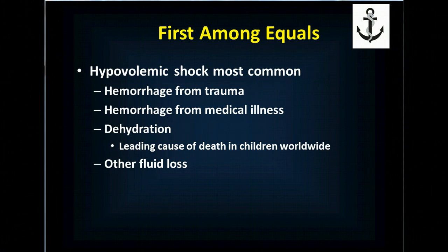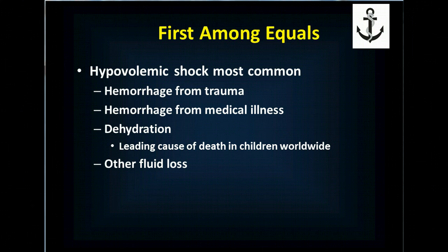Of all shock states, hypovolemic shock is the most common. Hemorrhage from trauma affects younger populations; hemorrhage from medical illness includes conditions like a ruptured ectopic pregnancy in a 23-year-old or a ruptured abdominal aortic aneurysm in a 62-year-old smoker. Dehydration is the leading cause of death in children worldwide, and while it's manageable on a ship with IV access and anti-nausea medications, it remains a real possibility. Other fluid losses from burns can also lead to hypovolemic shock.